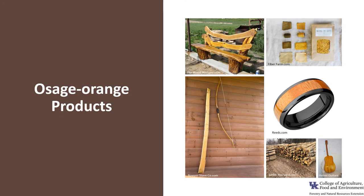Osage Orange generally is not harvested for lumber due to its crooked and knotty trunks and its size. The wood, however, is used for boards or small turning blocks and specialty items like bowls. It is also used for fence posts, archery bows, and musical instruments. Osage Orange wood extractives have been used in food processing, pesticide manufacturing, and dye making.